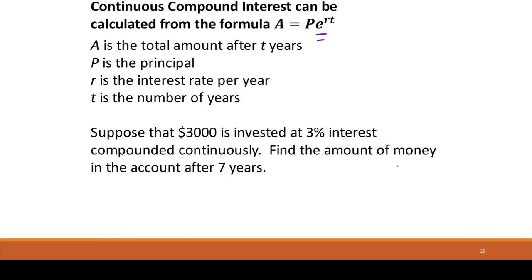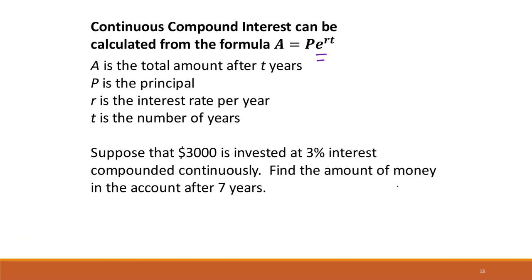So suppose that $3,000 is invested at 3% interest compounded continuously. Find the amount of money in the account after 7 years. So our principal is $3,000.